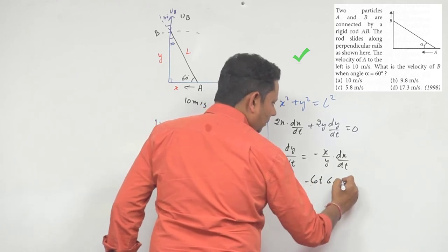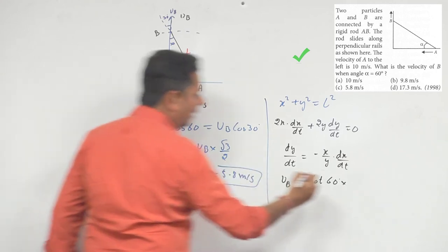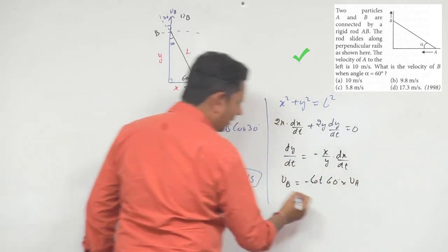Now, multiply by dx/dt. x is going to change, this equals VA. Now, the value is cot 60.